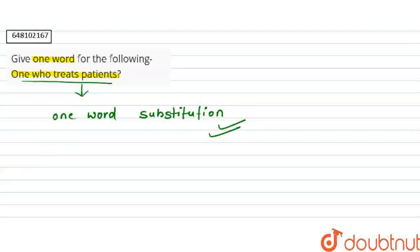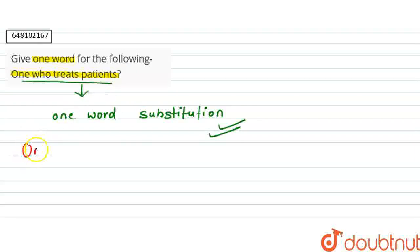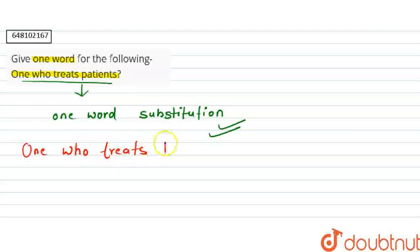It means, give us a sentence for one word. The whole sentence meaning is explained in one word. So first of all, we will go to the sentence meaning. We will write here: one who treats patient.